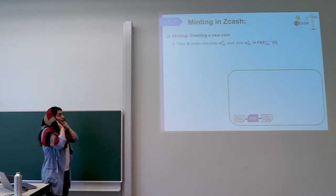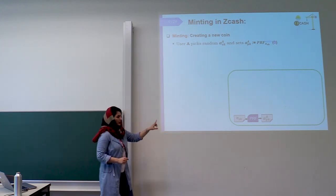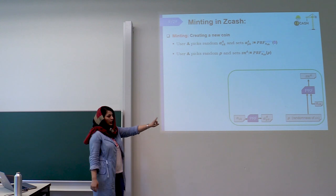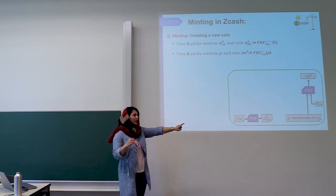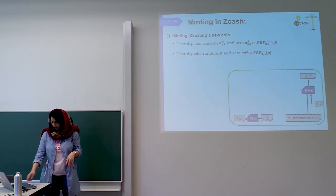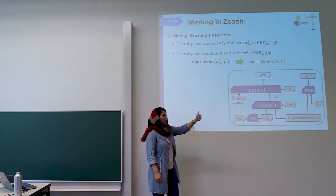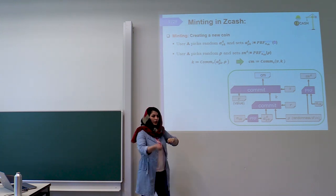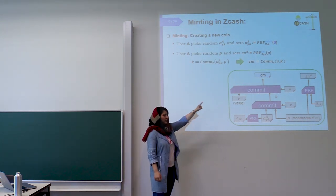In the minting procedure, user A picks a secret key, runs a pseudorandom function on it, and gets a public key. On the other hand, she picks a randomness rho, and given this randomness and her secret key as input to another pseudorandom function, gets the serial number of her coin. She then picks another randomness. You can see there are two levels of commitments. In the first level, she picks another randomness R and, given randomness R and her public key to the commitment function, gets K.